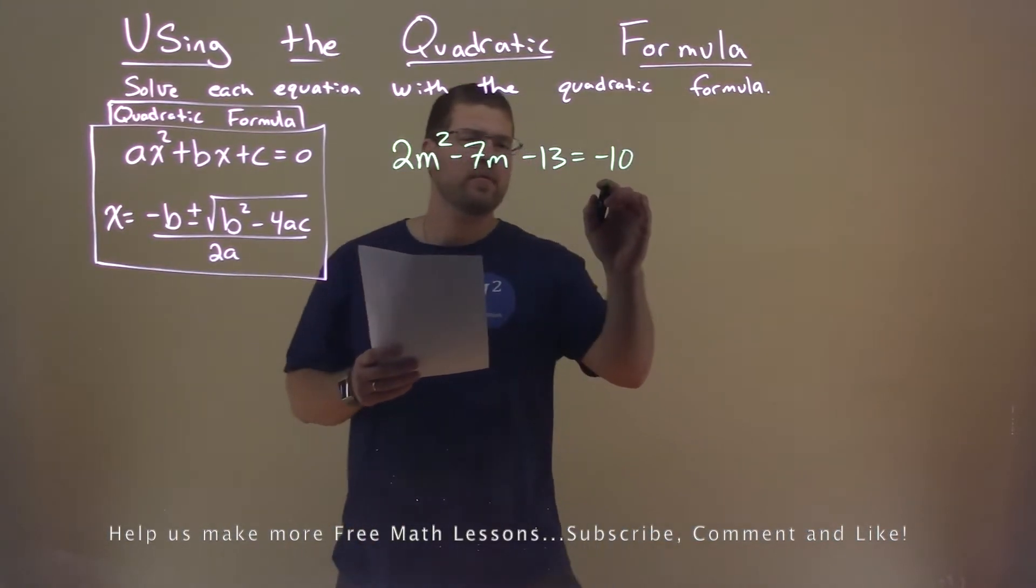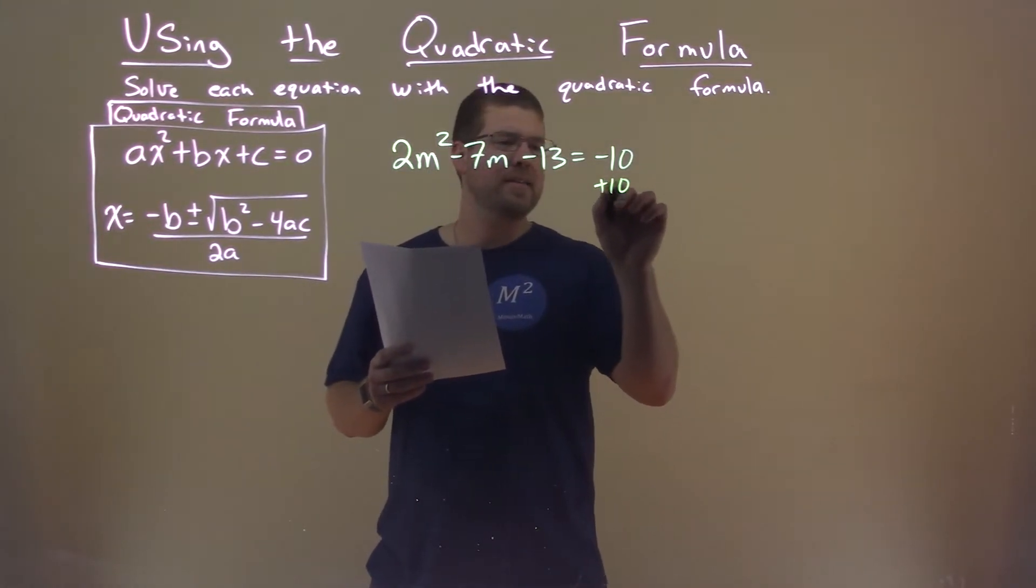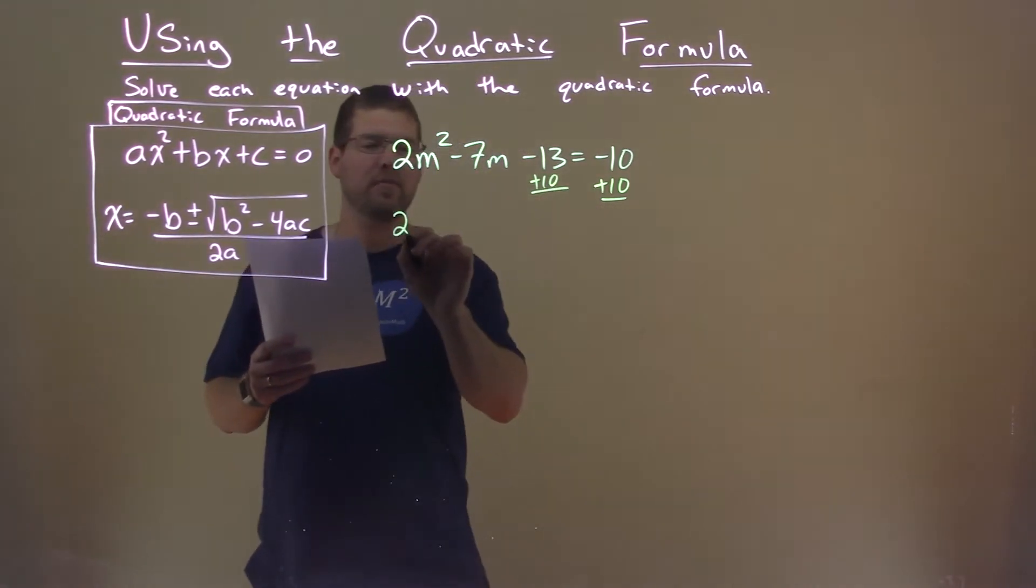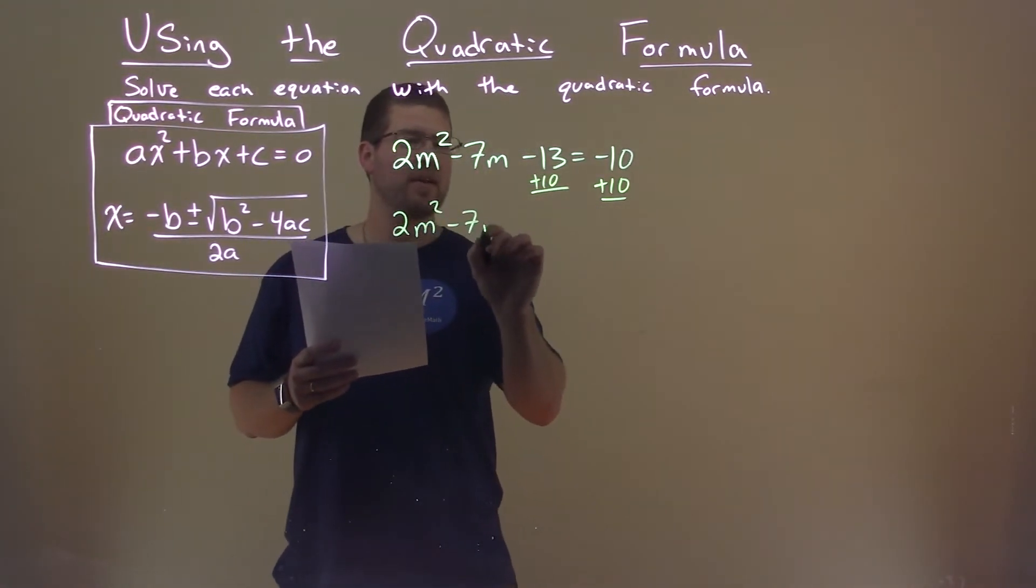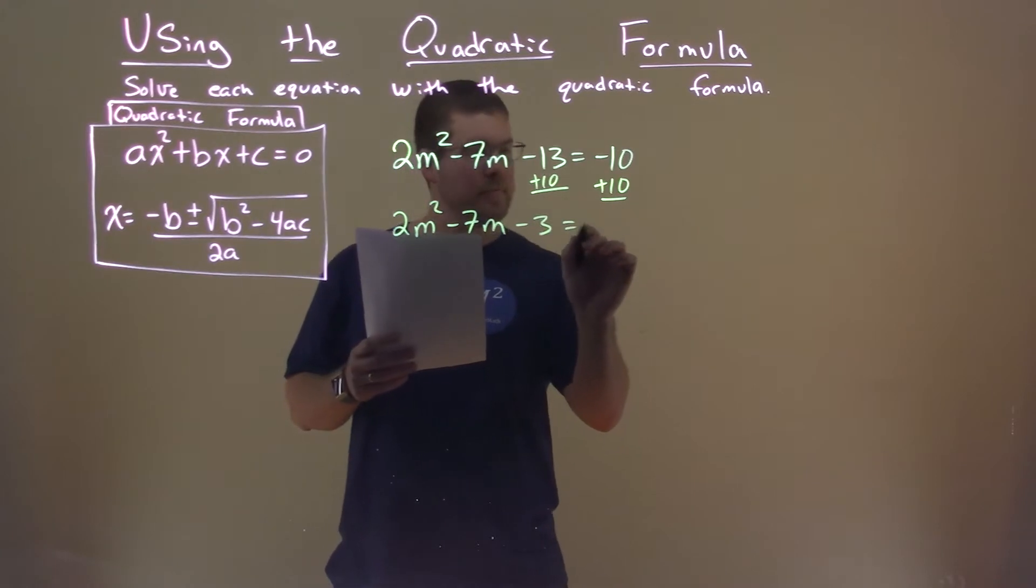I want to first get this equal to 0, so I have to add 10 to both sides. I now have 2m² - 7m - 3 = 0.